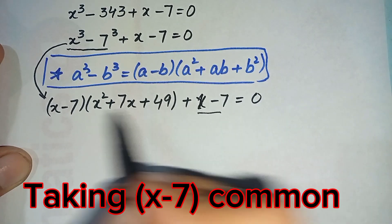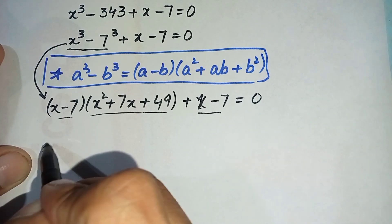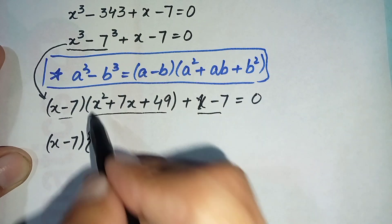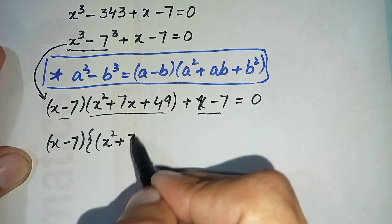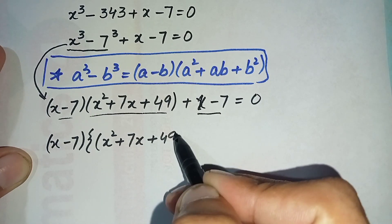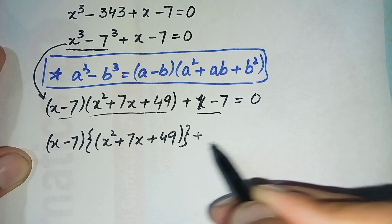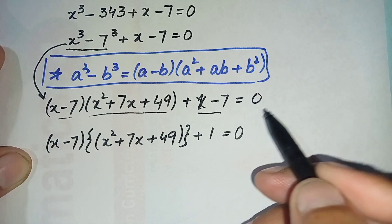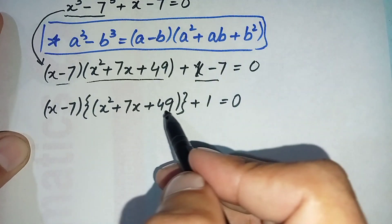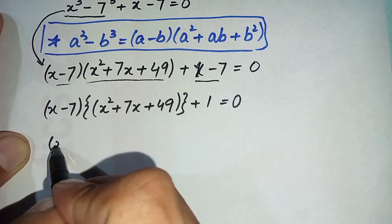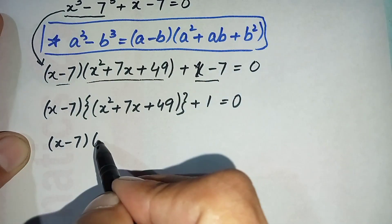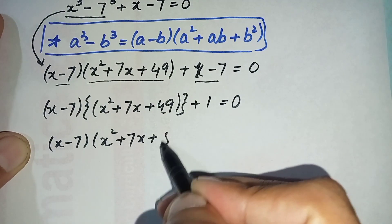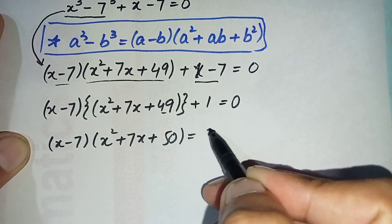We take (x - 7) common from both terms. It will become (x - 7) times (x² + 7x + 49 + 1), as 1 is left after taking (x - 7) common from the second term. Adding 1 to 49, this becomes (x - 7)(x² + 7x + 50) = 0.